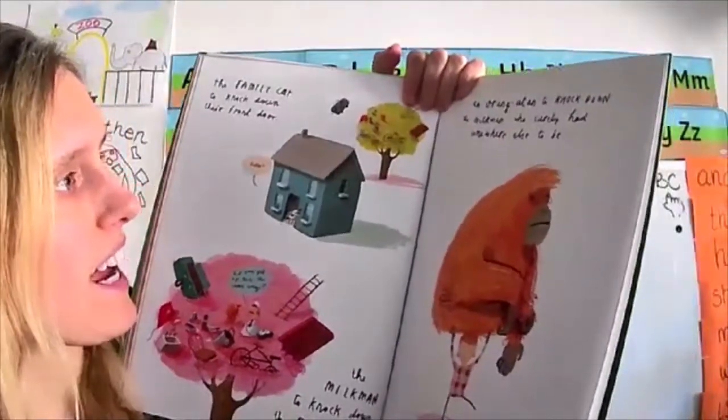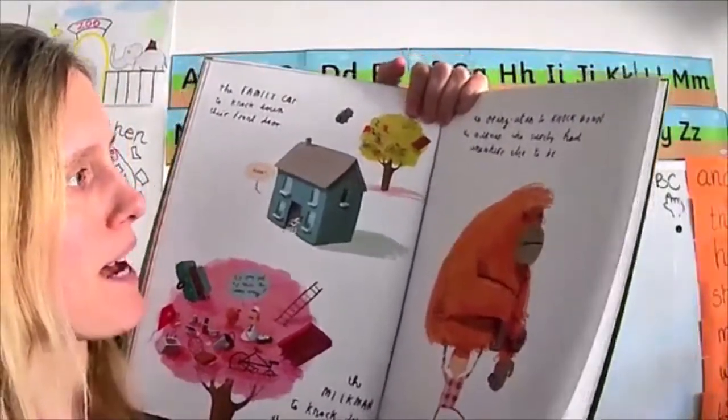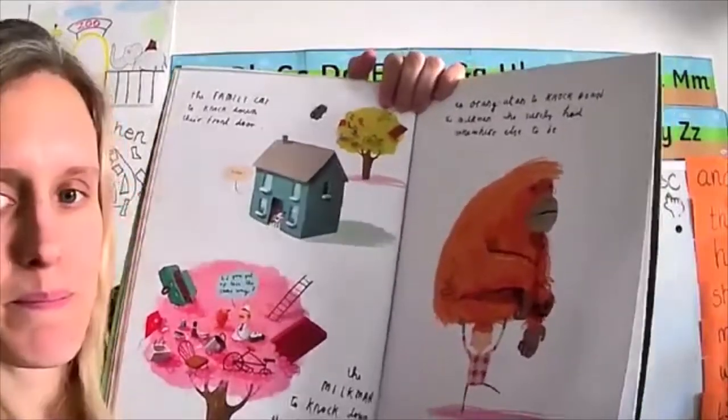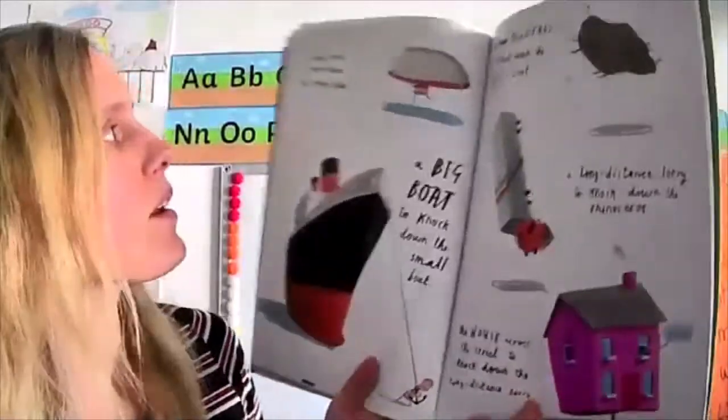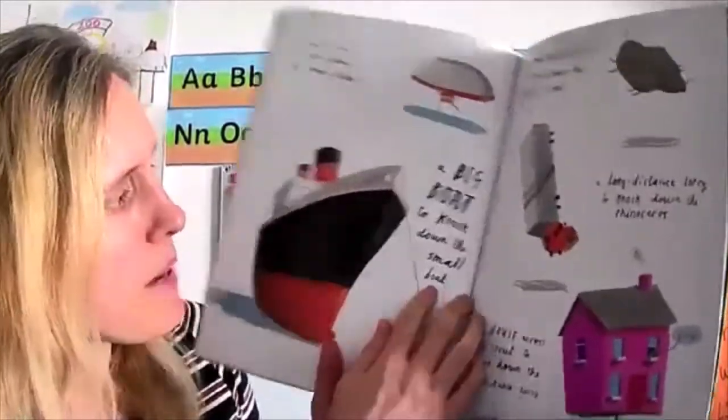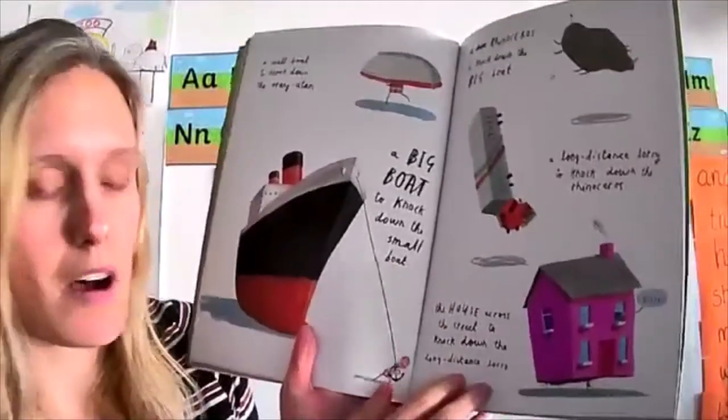An orangutan to knock down the milkman who surely had somewhere else to be. A small boat to knock down the orangutan. A big boat to knock down the small boat.